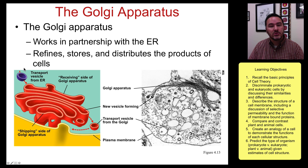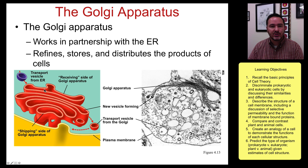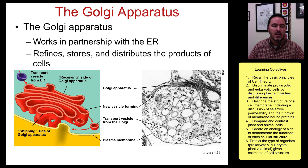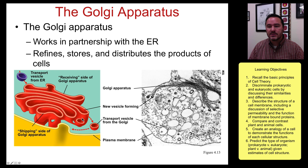That vesicle might come to the Golgi apparatus. The Golgi apparatus works in partnership with the ER — it refines those products, stores them, and then ultimately distributes them. It's kind of like the packaging company that sends the final product off to wherever it needs to go, which might be outside of the cell or sometimes inside of the cell.